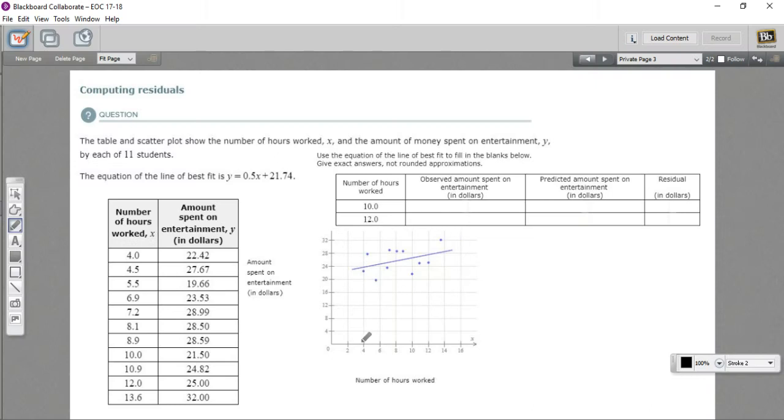In this problem, we have a graph with a scatterplot. And remember, a scatterplot is a bunch of points, and each point represents often a person or some other entity, and then the y-axis is one thing about that person, and the x-axis is another thing about that person.